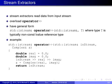Stream extractors read data from an input stream by overloading 'operator>>'. The general form has two parameters: an lvalue reference to an istream (the input stream the data is read from), and the value to be read, which is typically a non-const reference so the read value can be passed back to the caller.